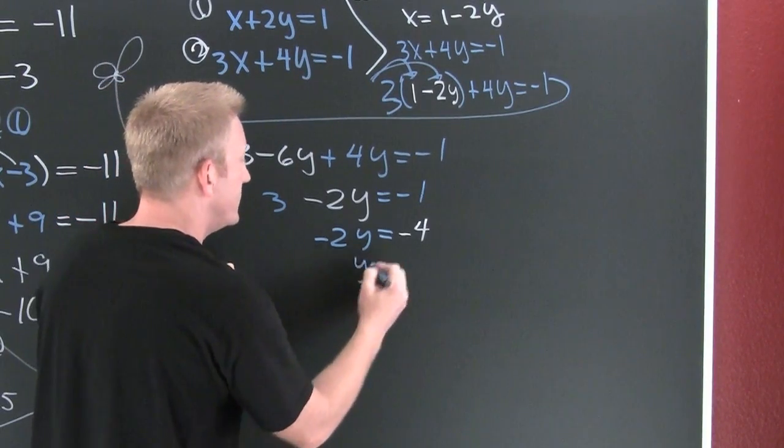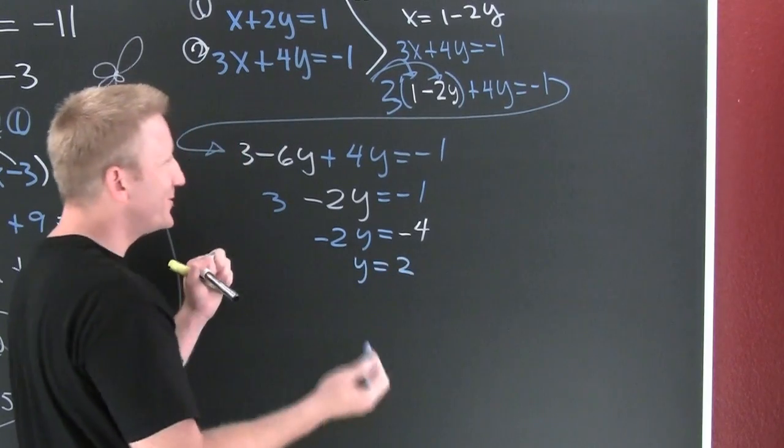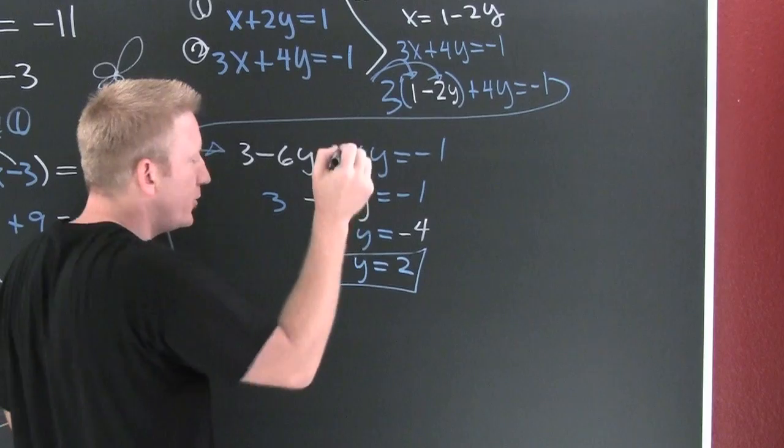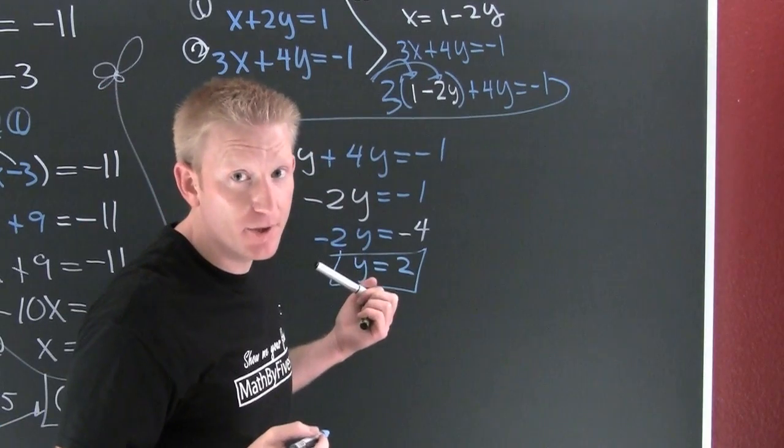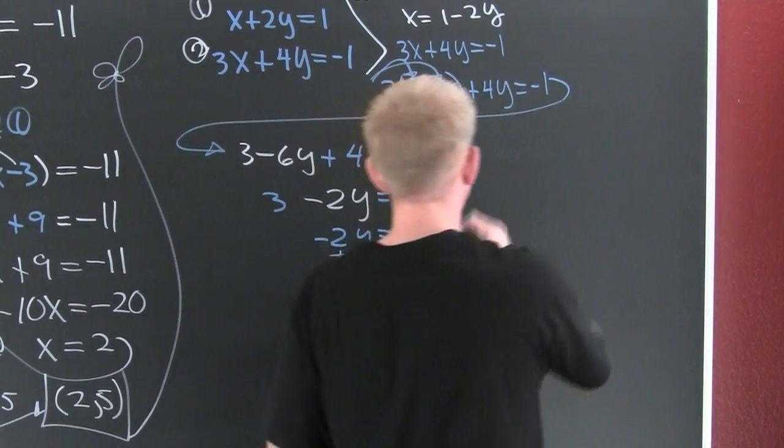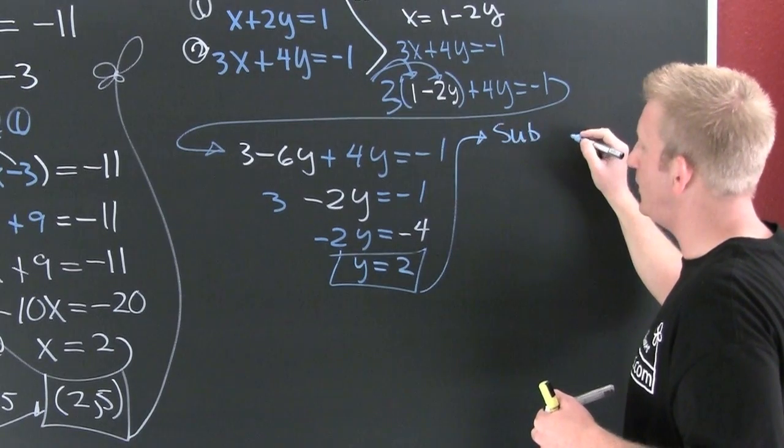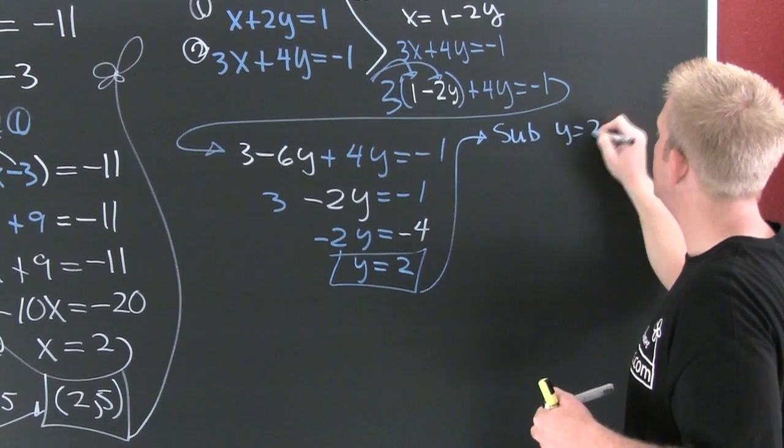So do I have an x and a y? No, I have a y. So then I need to plug that back up into one of the originals. Let's sub y equals 2 into my original. Why don't we sub it into one?